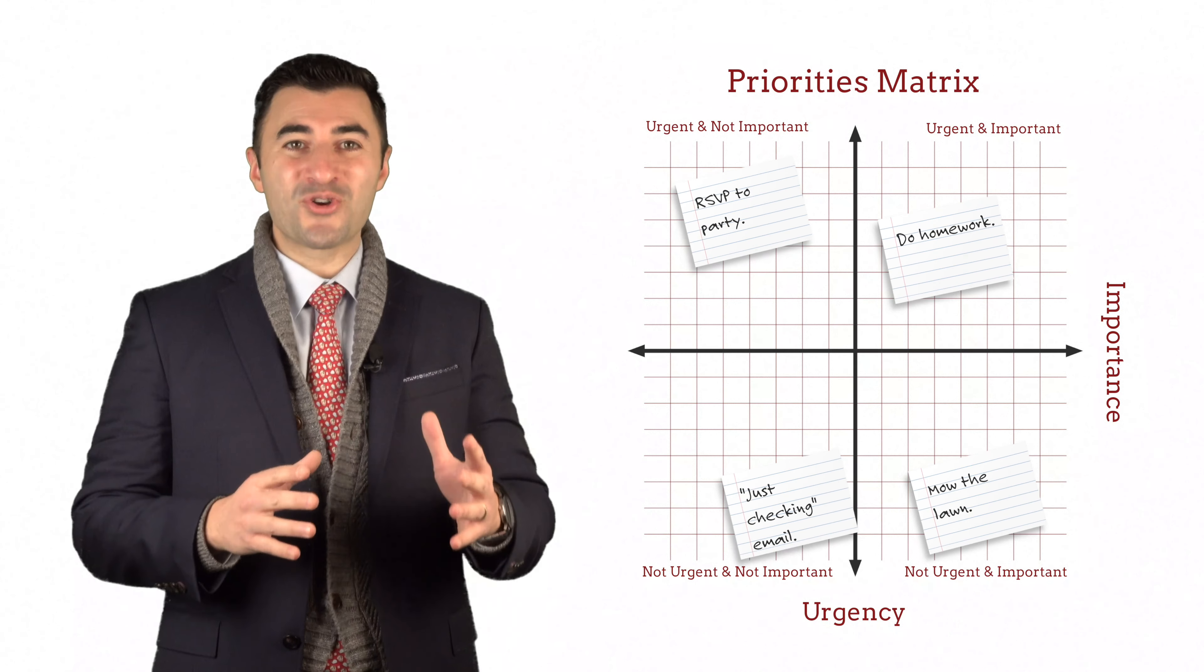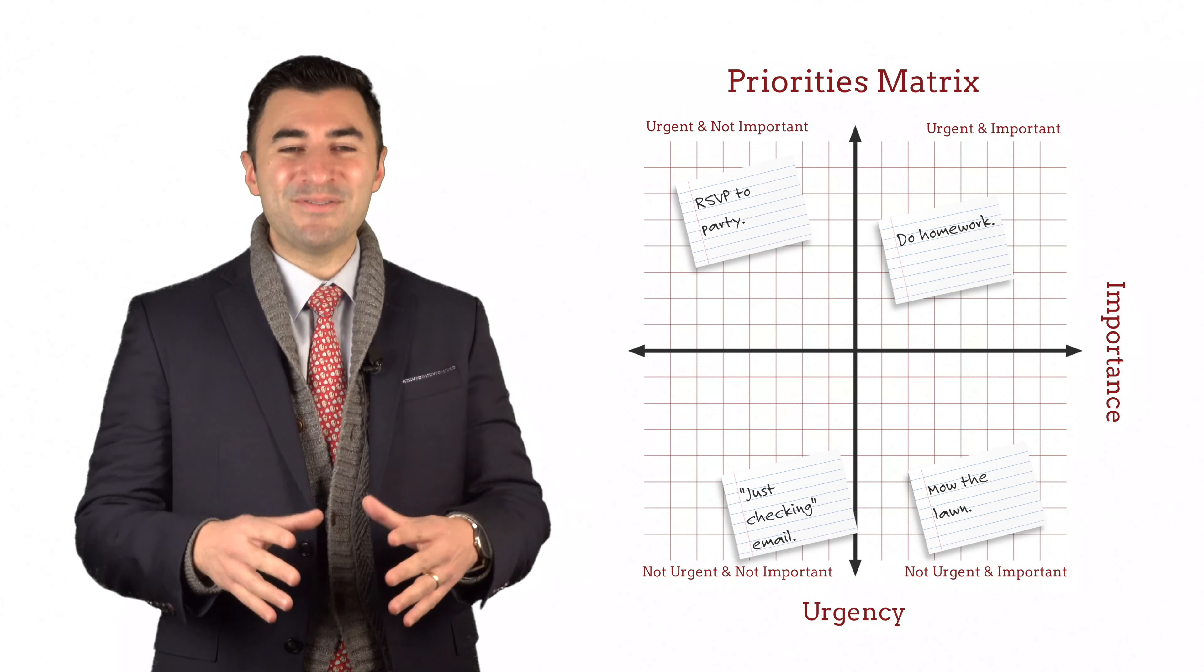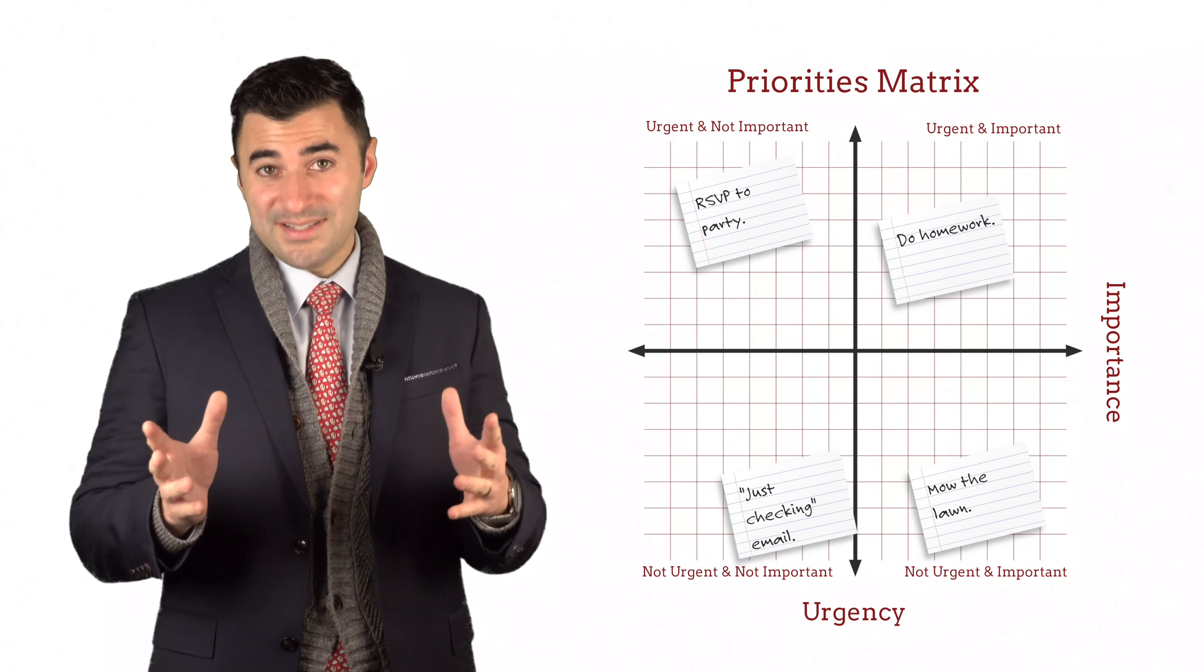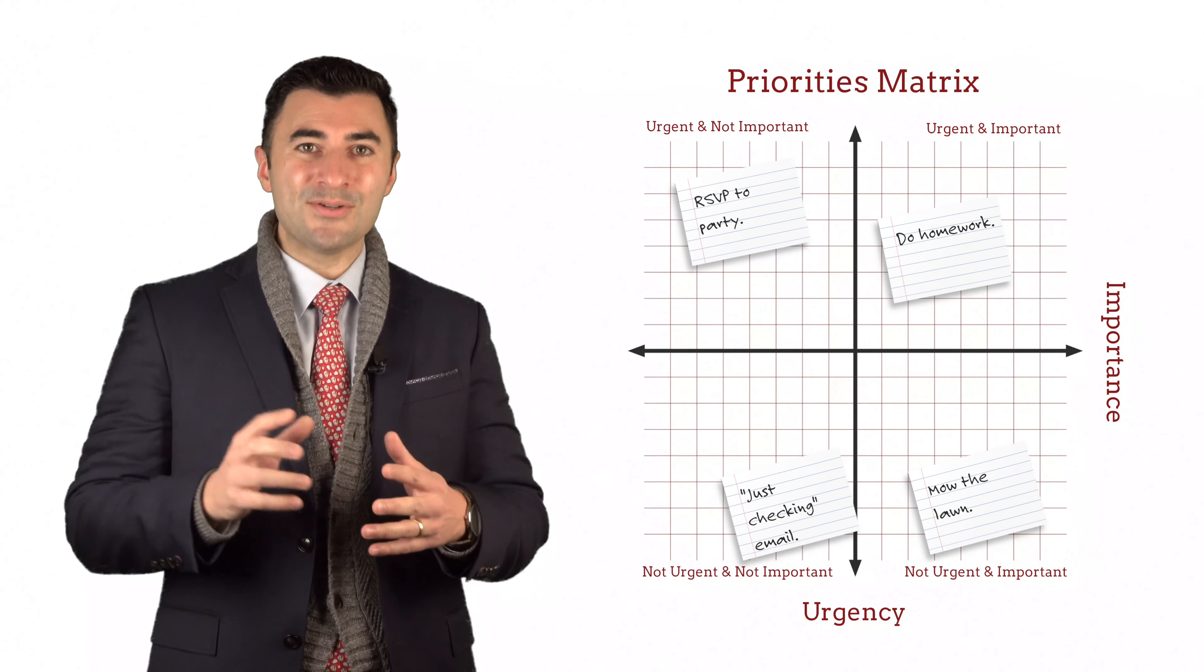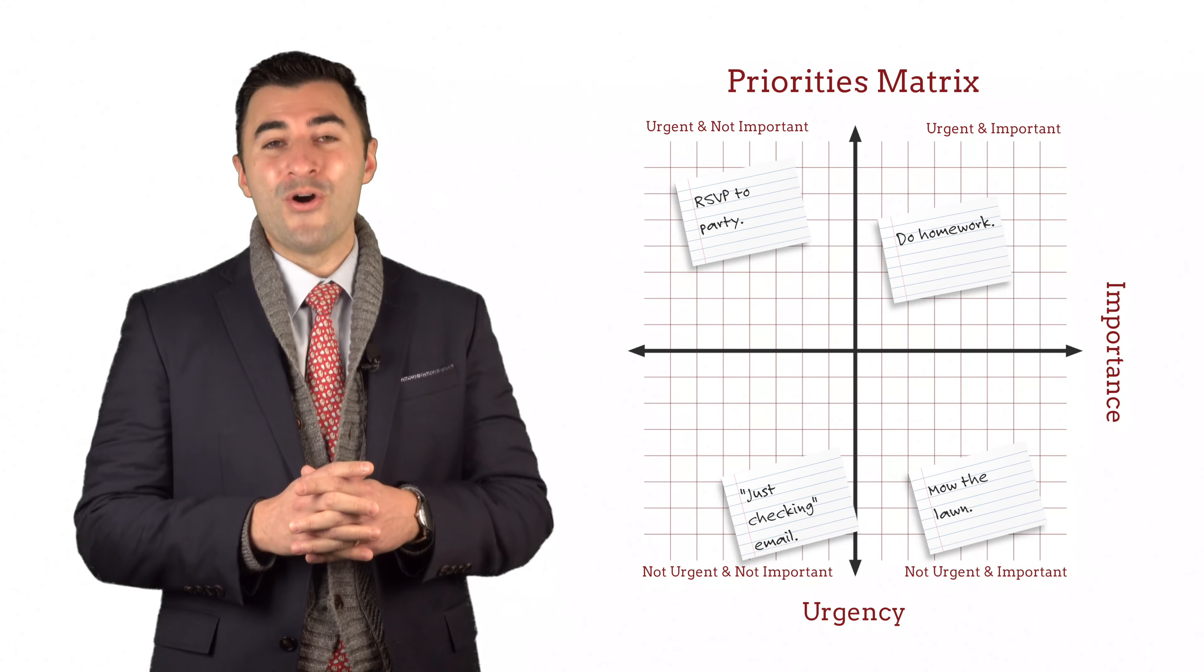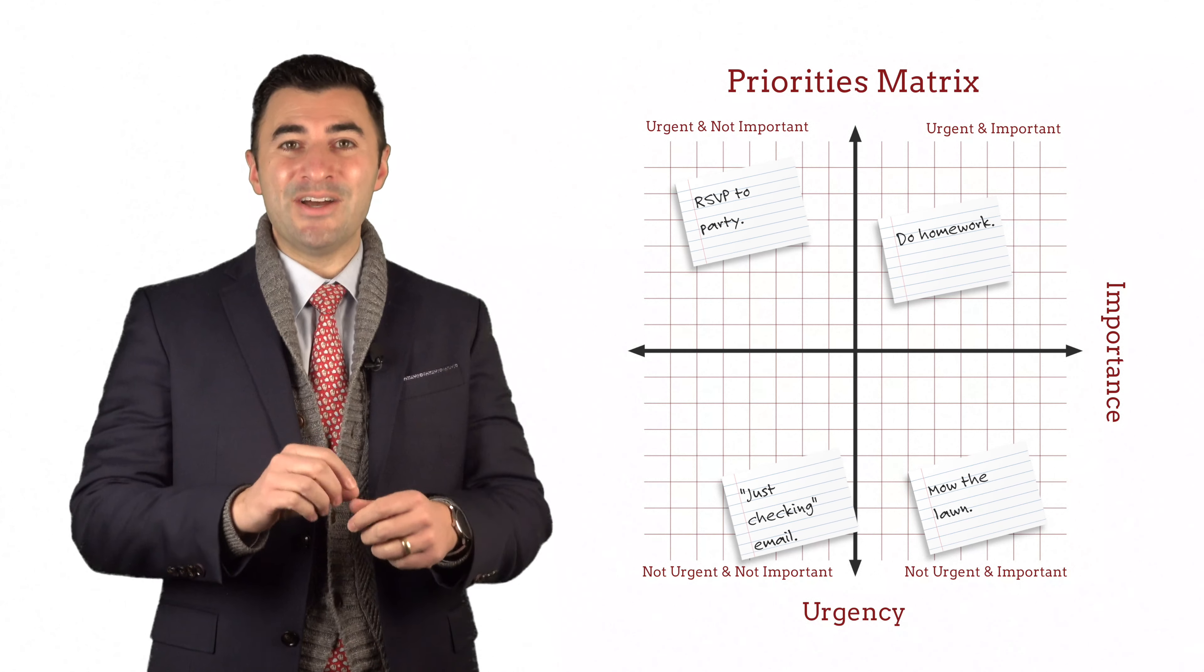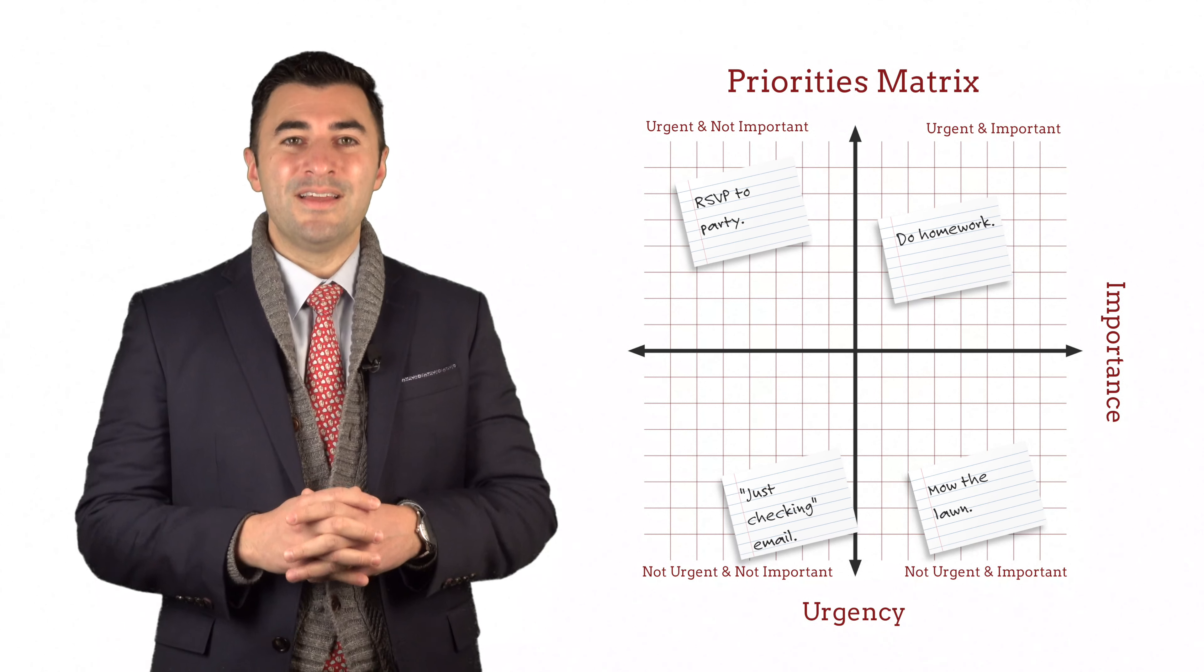Now he might need some trial and error with regard to the mechanics of it or how to set it up. It's going to take some time to find a system that works for him, but some ideas you might suggest: he could have this all written in a notebook and pencil items into one of the appropriate quadrants, or you might have a cork board and write things down on index cards and just shift them around to the appropriate spot.